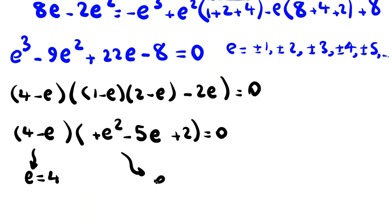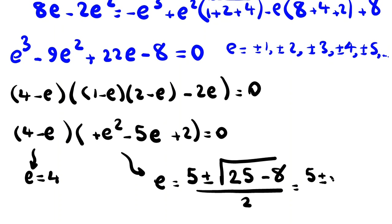If we use the quadratic formula: (-b ± √(b² - 4ac))/2a, which gives (5 ± √(25 - 8))/2 = (5 ± √17)/2.